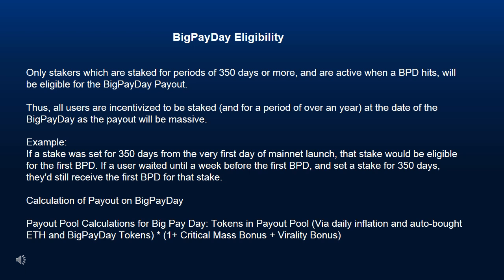Calculation of Payout on Big Pay Day. The payout pool calculations for Big Pay Day include: tokens in payout pool via daily inflation and auto-bought ETH, and Big Pay Day tokens multiplied by (1 plus critical mass bonus plus virality bonus).